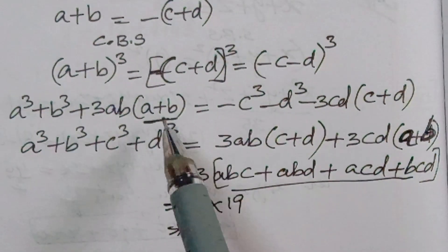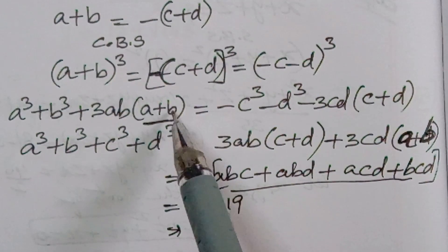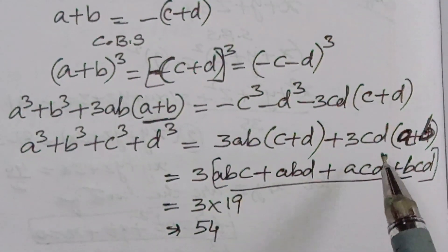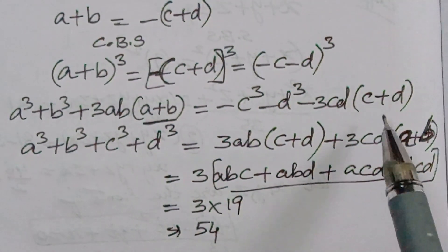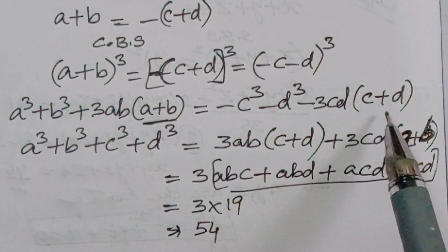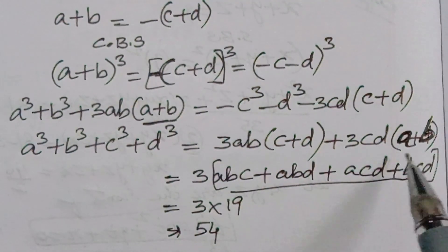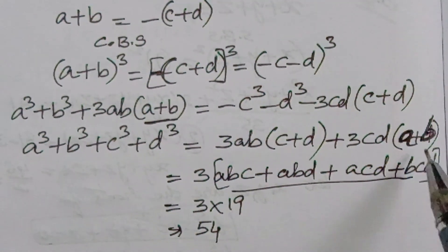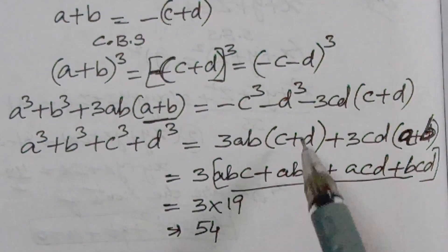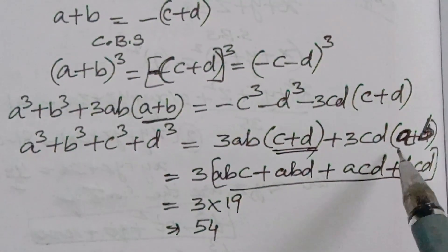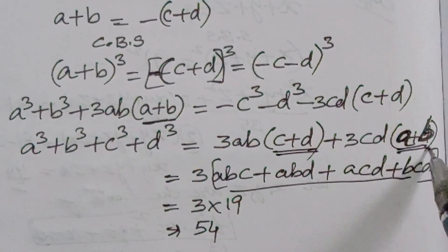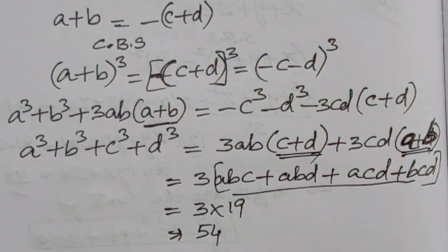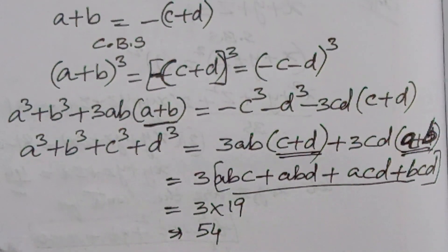In the place of (a + b) we are writing −(c + d), and in the place of (c + d) we are writing −(a + b). So we are interchanging the values, and we are getting both terms positive only.